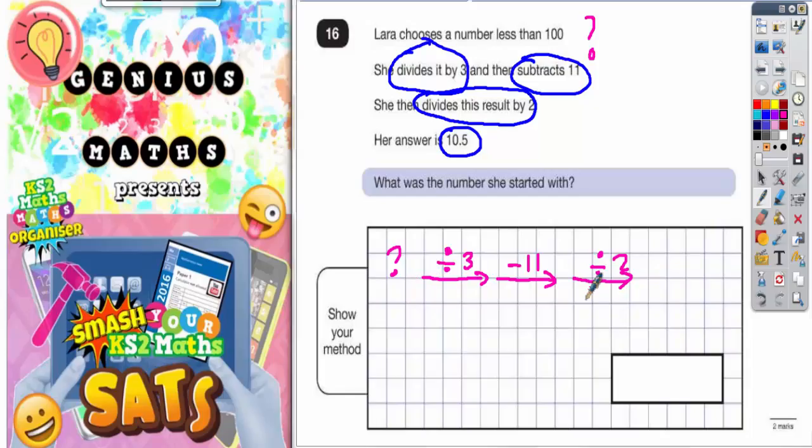So this is our number machine. After she's divided by 3, subtracted 11, and divided by 2, out pops 10.5, which is her answer.